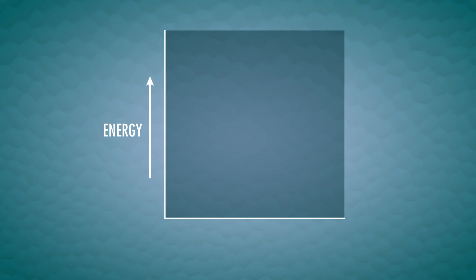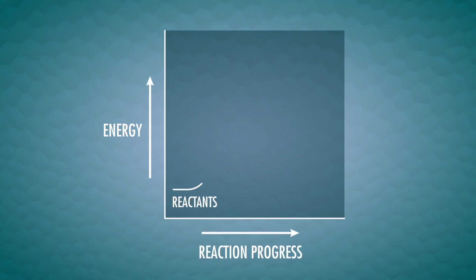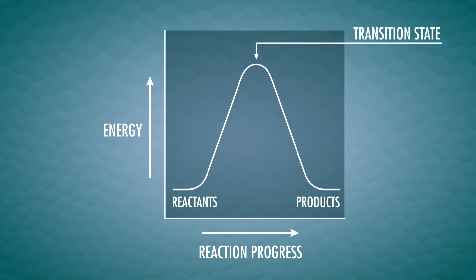It can be tough to understand all these relationships just from equations, but we can visualize them with energy diagrams. The y-axis represents the energy of the reaction, usually represented by delta H or delta G. For this episode, we'll just think about the enthalpy of the reaction, delta H, for simplicity. The x-axis of an energy diagram represents the reaction progress, a line that starts with reactants on the left and moves towards the products on the right. The peak of the hill in between reactants and products is the transition state. We have to pay attention to how high or low the reactants and products are in an energy diagram, because that tells us even more about the reaction.